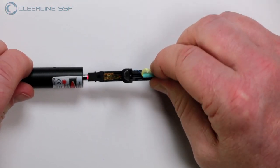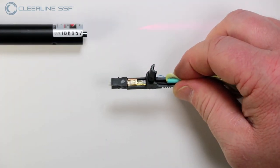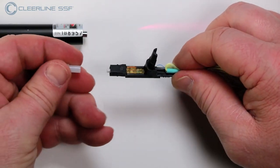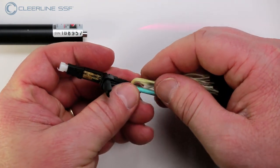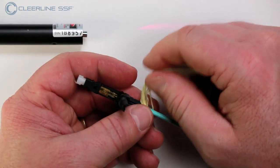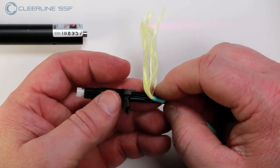Remove the connector from VFL. Install the dust cap. Ensure the fiber is straight and place the aramid yarns to one side. After that, close the hinge.